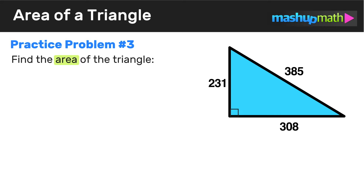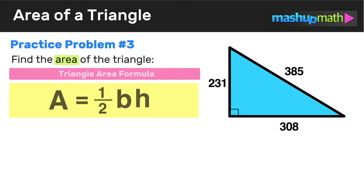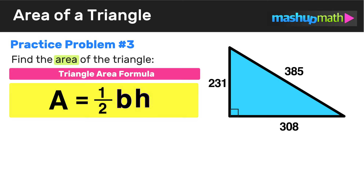Now we're ready for the third and final practice problem. Again, we have to find the area of the triangle using the triangle area formula. Let's identify the values of B and H for this right triangle. Looking at the diagram, the base of this right triangle is 308, so we label it B and replace B with 308 in the formula.